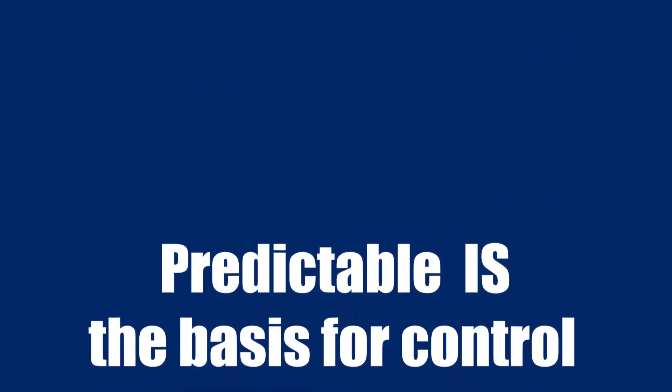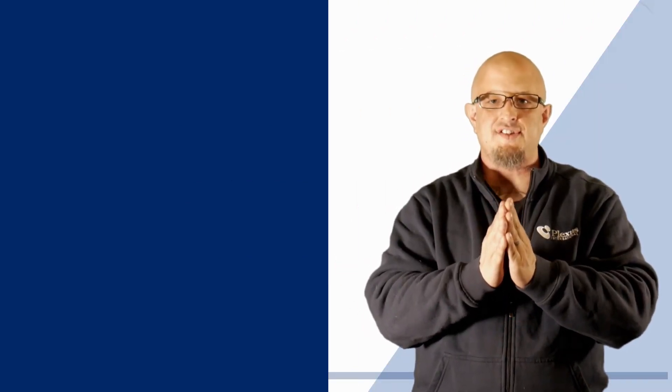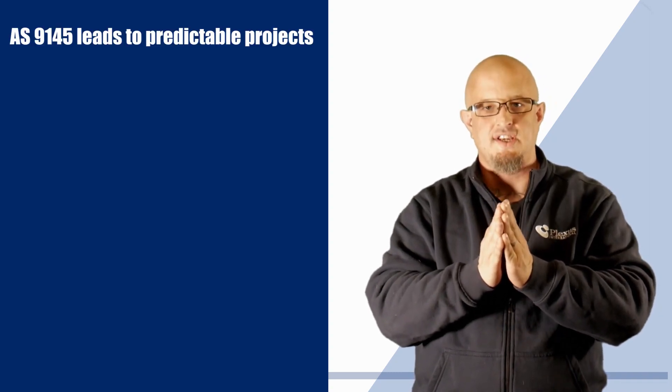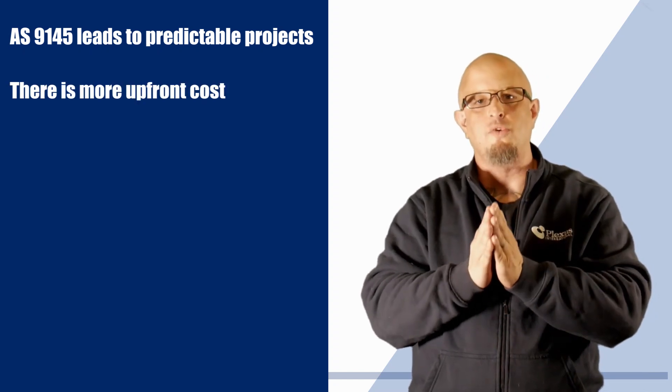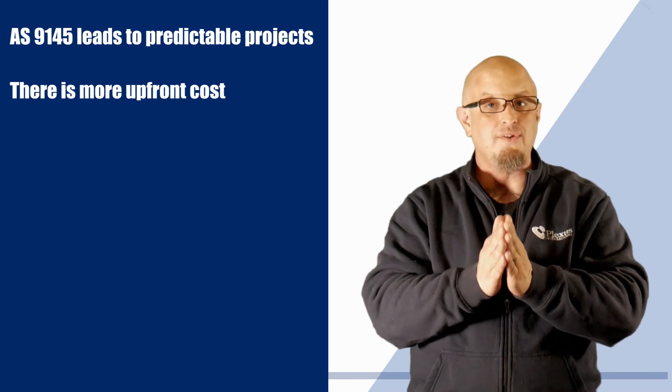Let's recap. AS9145 is a system that will lead to predictability in your business processes. It will run you a little bit more upfront to implement, but in the long term will lead to predictability that will save you a ton more than if you were company A.